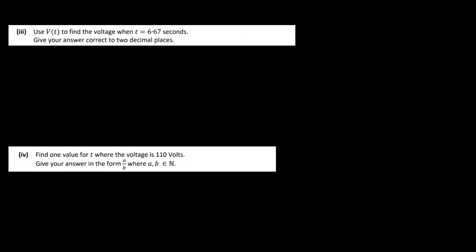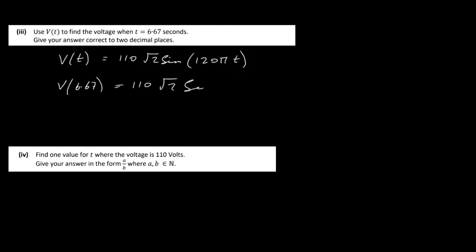In part 3, use V(T) to find the voltage when T = 6.67 seconds, giving the answer to two decimal places. We substitute into V(T) = 110√2 · sin(120π × 6.67) and evaluate on the calculator, getting 147.95 volts.